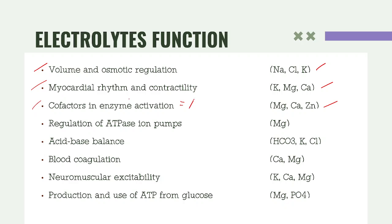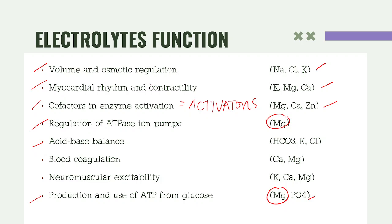Being a cofactor, the specific name for ion cofactors is 'activators.' For the regulation of the ATPase ion pump including production and use of ATP from glucose, magnesium and phosphate are involved. For acid-base balance — familiar from Clinical Chemistry 1 — the most common role is bicarbonate, though potassium and chloride can also be included.